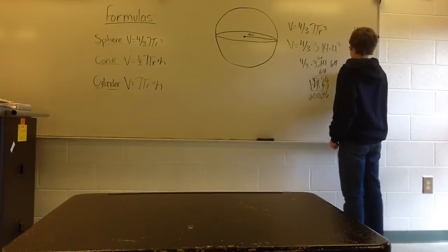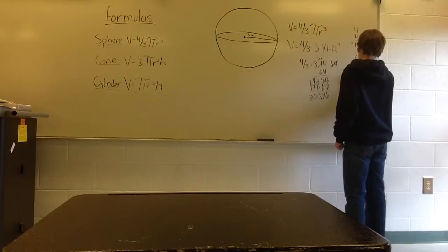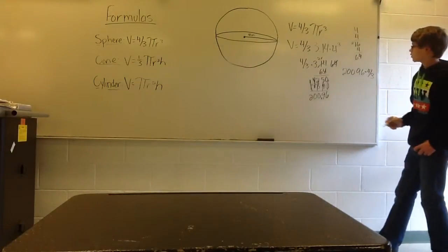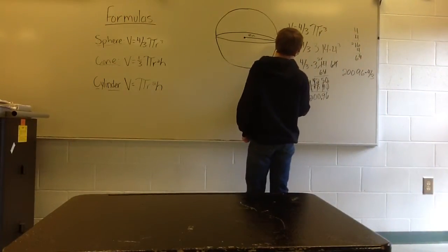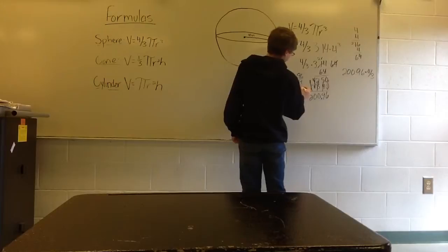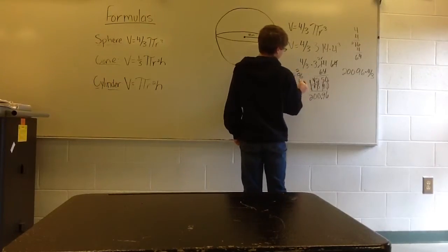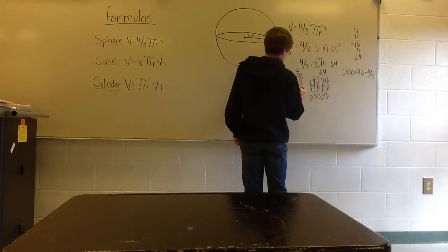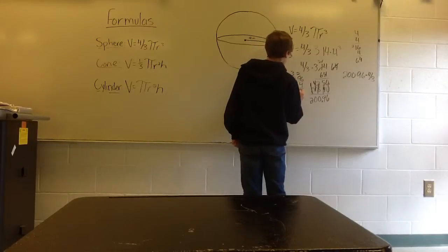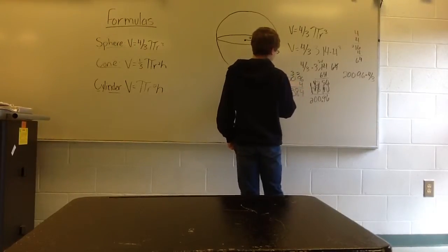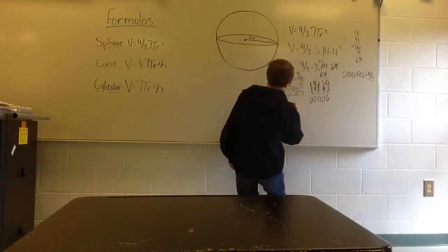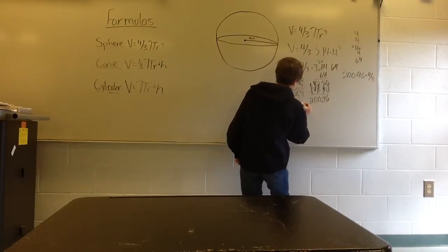So you now have 200.96 times 4 thirds. Multiply 200.96 by 4: 6 times 4 gives you 24, bring your 2, 4 times 9 gives you 36 plus 2 gives you 38, bring your 3, 4 times 0 gives you 0 plus 3 gives you 3, 4 times 0 gives you 0, and 4 times 2 gives you 8. Count your decimal places — you have 2 — bring it over. Your answer is 803.84.